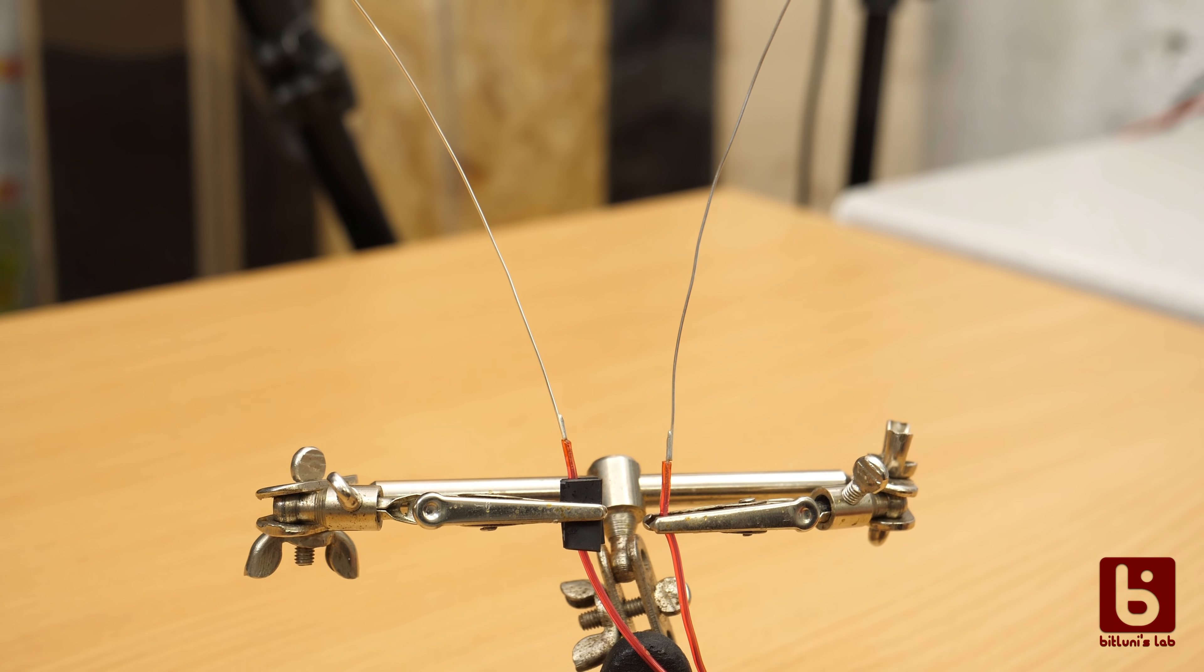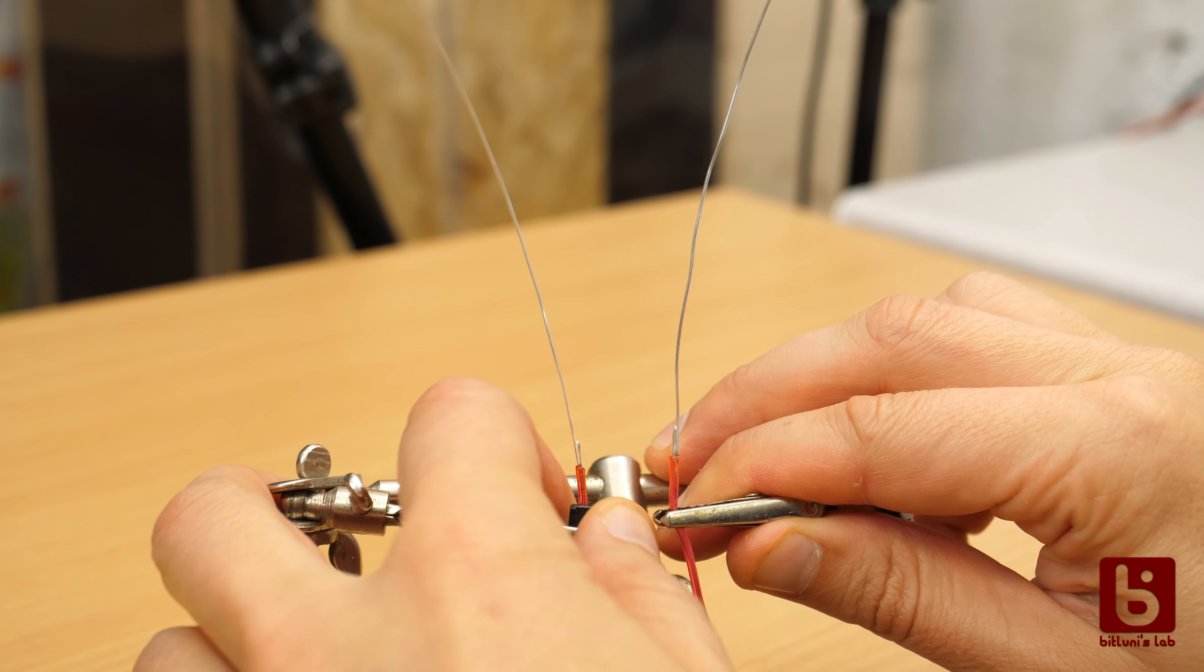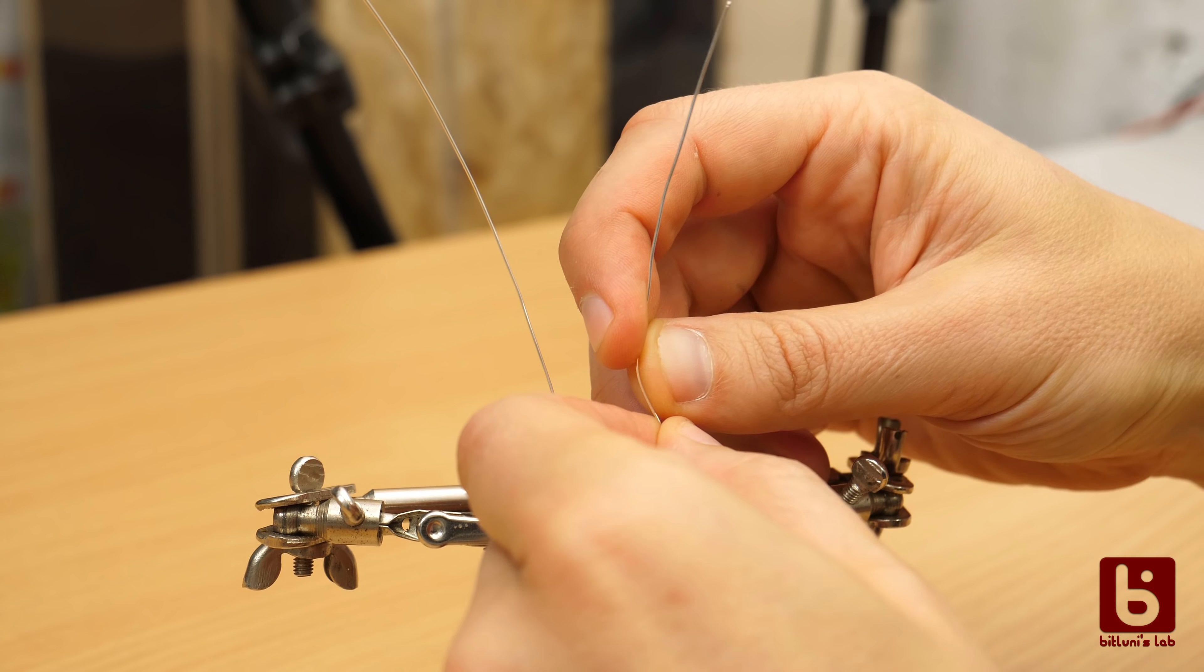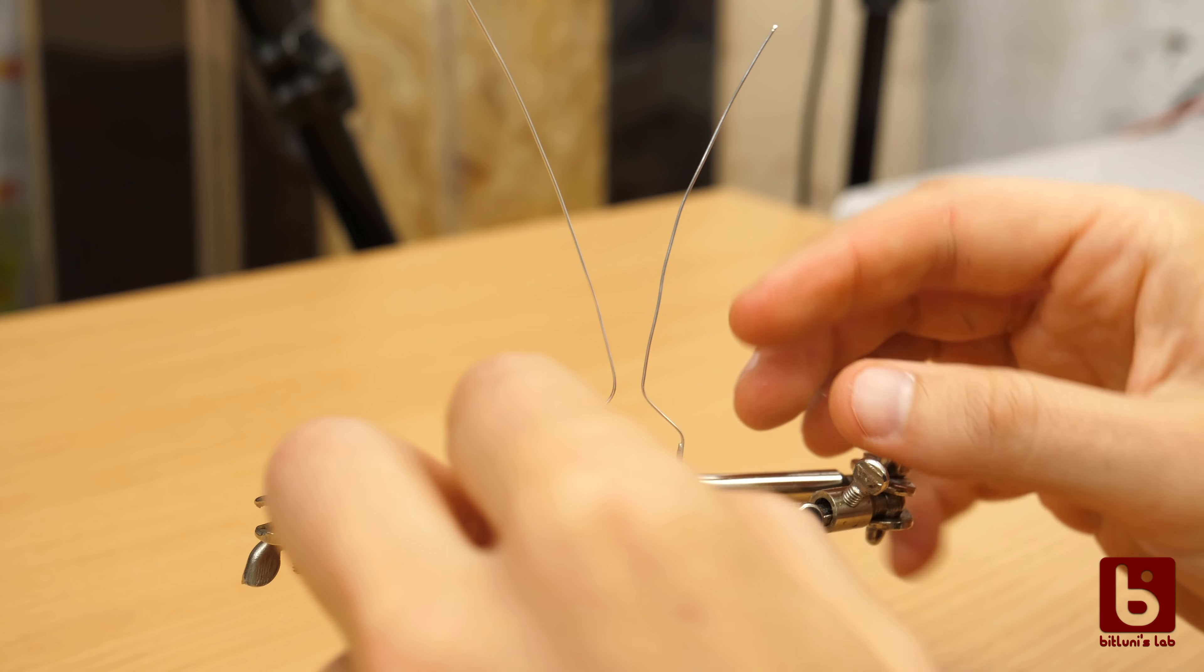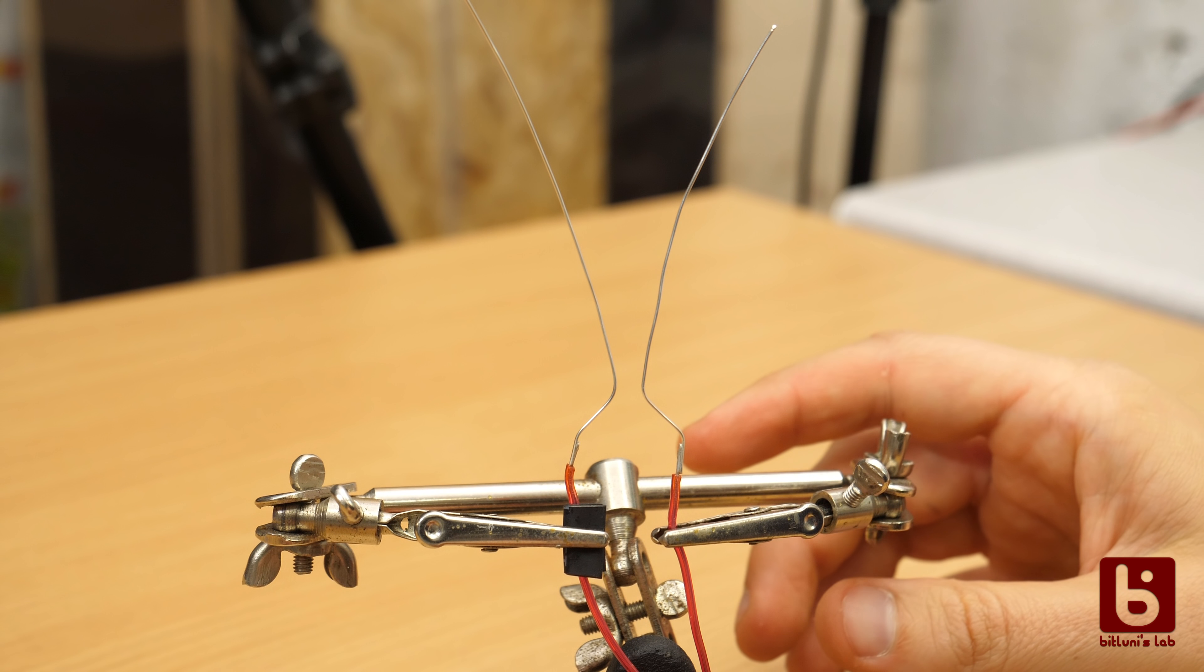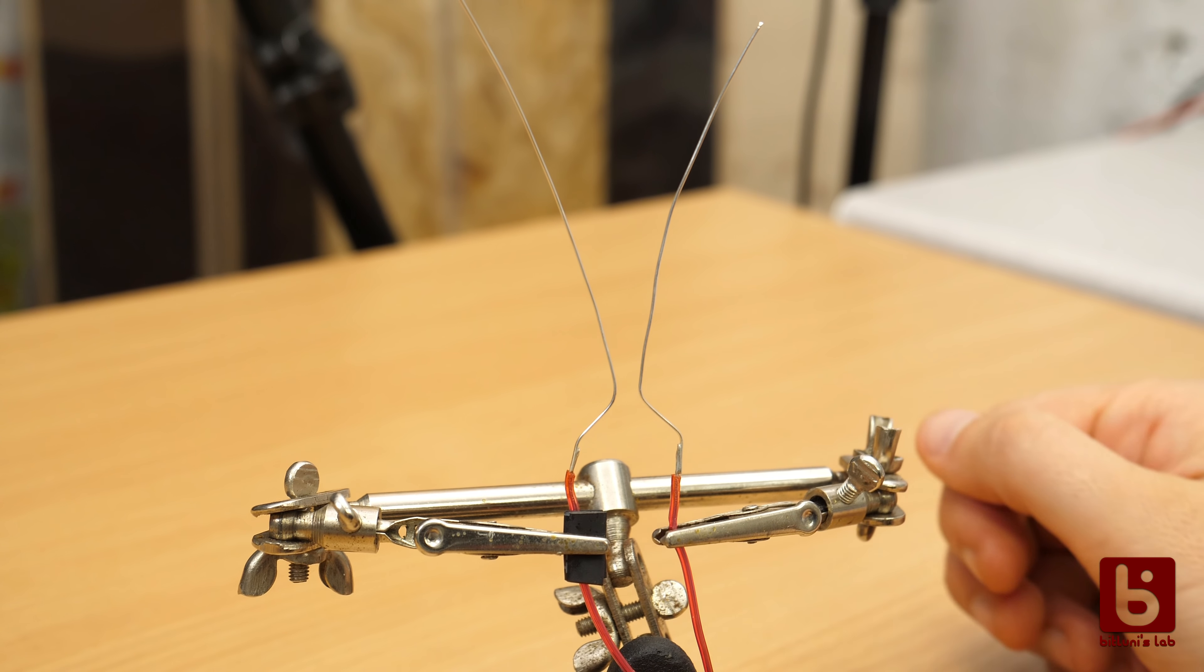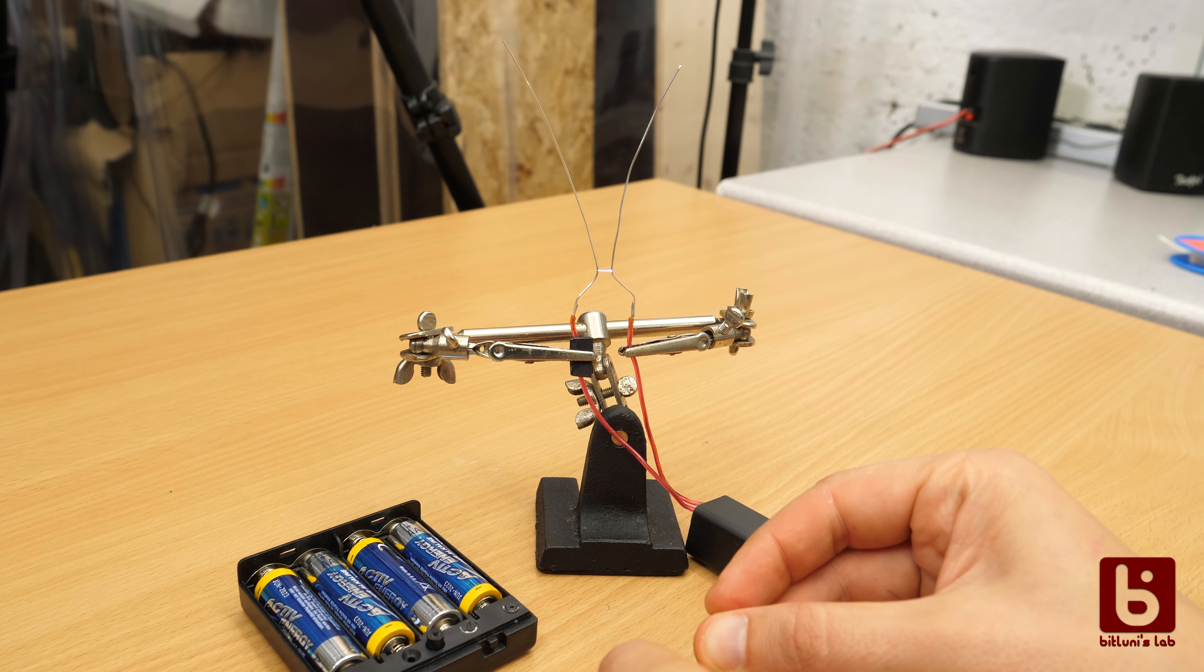Now we need to set up the Jacob's Ladder. I will use my helping hands to hold it in place. The arc of this transformer is able to bridge a few millimeters. Since we don't want anything to catch on fire we keep these ends 2 centimeters apart and bend the wires such that they are close enough around here. This will be the starting point of our arc.